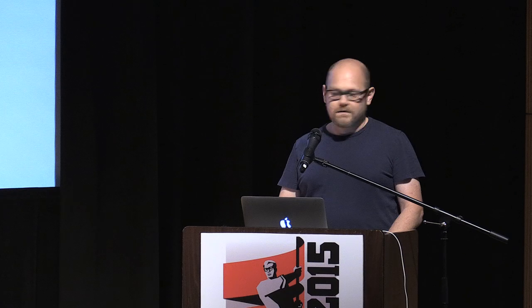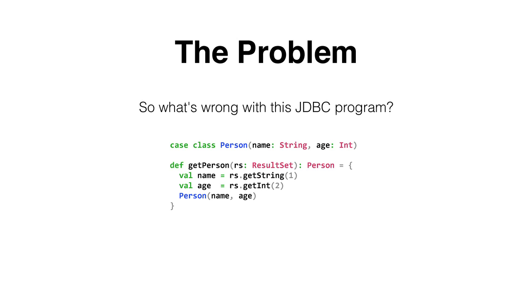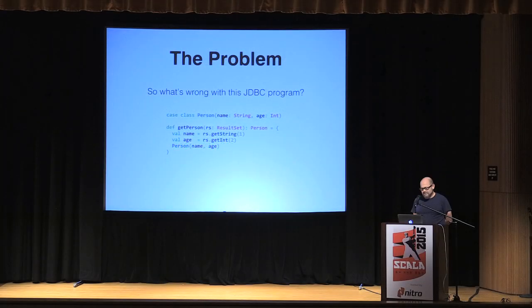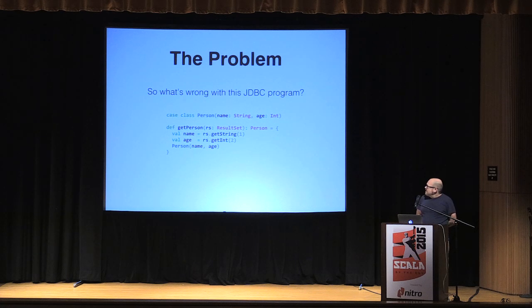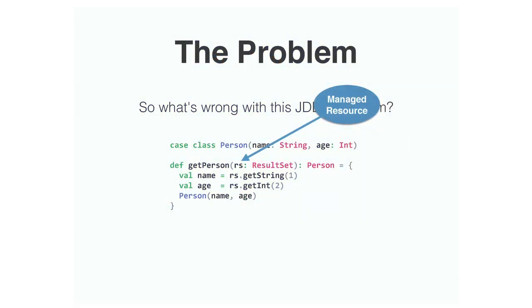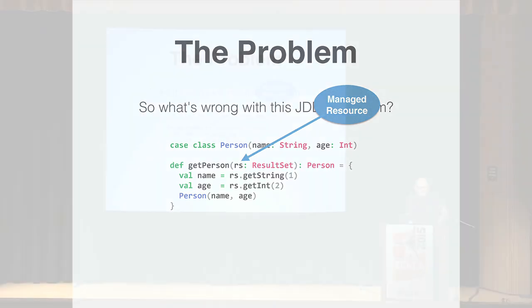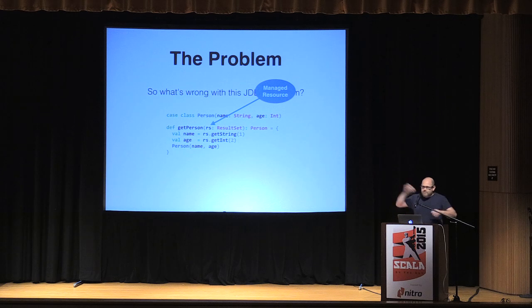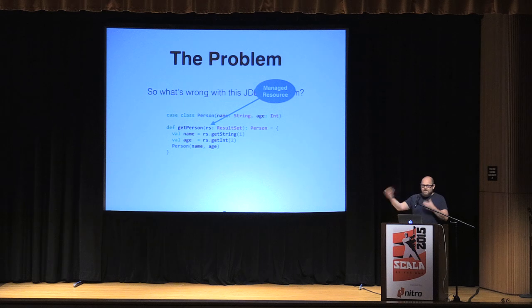Let's talk about what's wrong with JDBC. Here's a little program. We've got a case class — a Person that has a name and an age. We have a method that takes a ResultSet, reads a string from the first column, an int from the second column, constructs a Person and returns it. This is how we would write it in Java, and it looks okay. But the ResultSet is a lifetime-managed object. If you leak it by assigning it to a var, or letting it hop onto a Future somewhere, you're breaking the contract — you're holding on to this reference longer than the person calling this method is expecting.